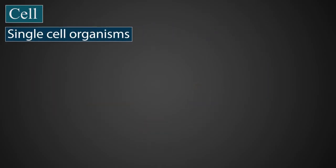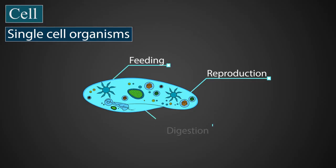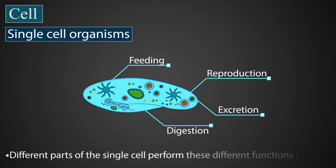All life processes, like reproduction, feeding, digestion, and excretion, occur in the same cell. Different parts of the single cell perform these different functions.